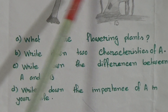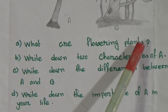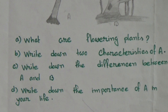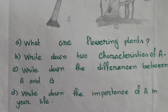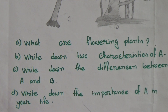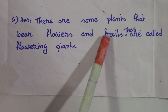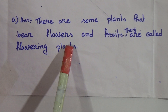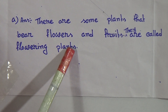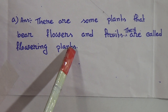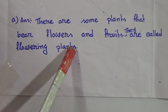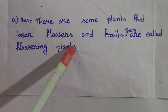Answer to Part A: Plants are of two types — flowering plants and non-flowering plants. The plants that bear flowers and fruits are called flowering plants, such as mango and jackfruit. They are called flowering plants because they bear both flowers and fruits.